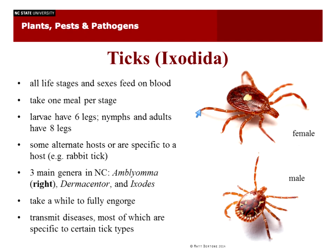Tick larvae have six legs, like all mites — because ticks are really just big mites — whereas nymphs and adults have eight legs, like most arachnids. Some ticks alternate hosts: deer ticks, for instance, start out on mice and go to deer. Others are specific — the rabbit tick only feeds on rabbits. There are three main genera to be concerned about as humans in North Carolina: Amblyomma — the lone star tick, where the female's name comes from the dot in the middle of its body — as well as Dermacentor and Ixodes.